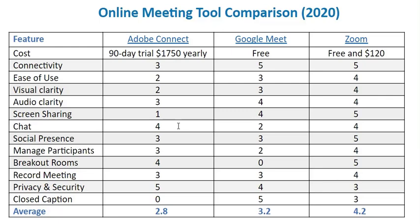In terms of chat features, Adobe Connect and Zoom are pretty much the same. They allow you to chat to the whole group and to individual members within the group, and you can see the chat while you also see members of the meeting. Google Meet isn't as good — as soon as the chat goes up, it actually blocks pictures of people in the meeting. And if you post a comment or a link and someone comes into the meeting after you've posted, they won't see the previous chat.